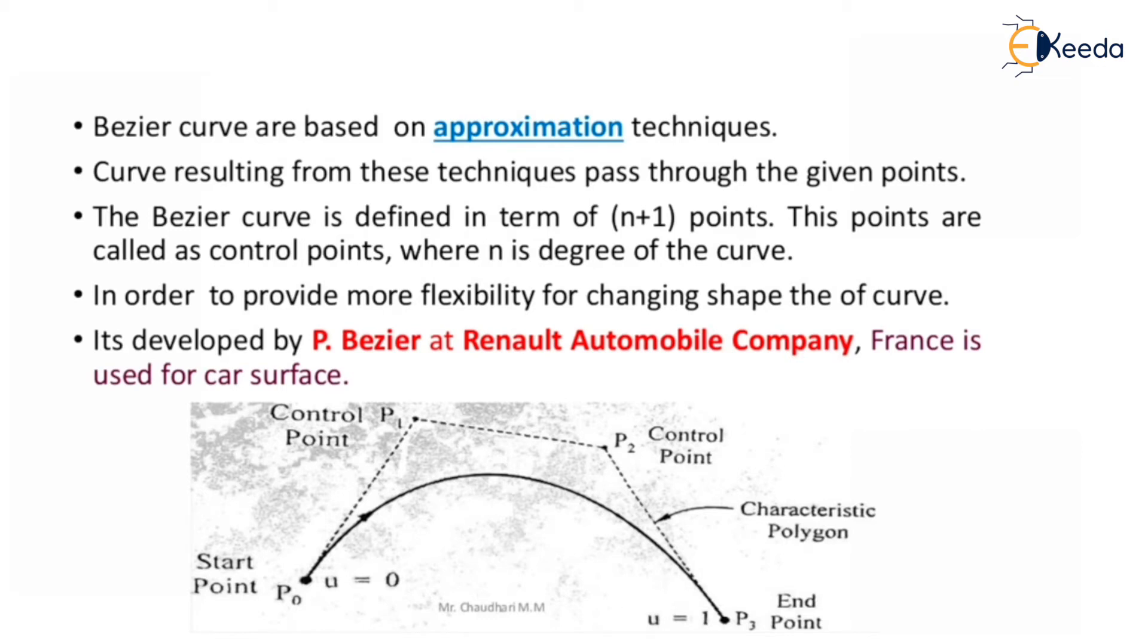It's developed by P. Bezier at Renault Automobile Company, France, and is used for car surfaces. So if you observe, the starting point, ending point, and there are two control points. The starting point has u value zero and at the end point u value is one, that is minimum value and maximum value. Then there are two control points P1 and P2, that is the characteristic polygon.